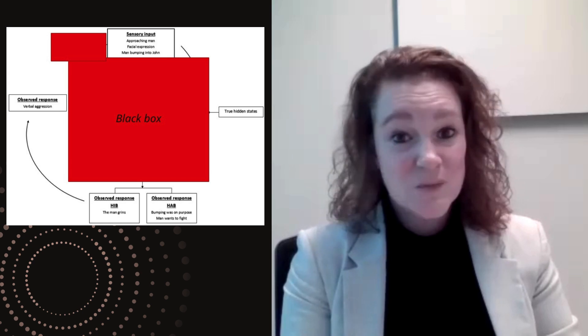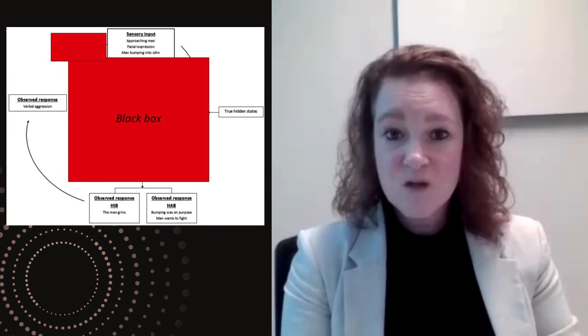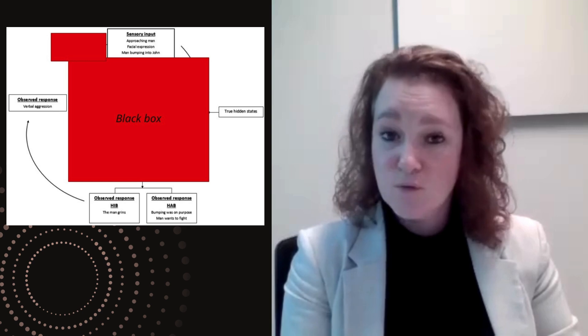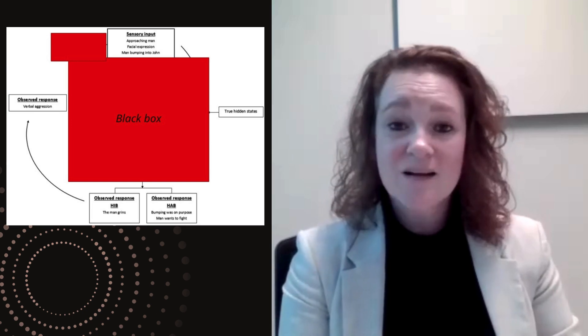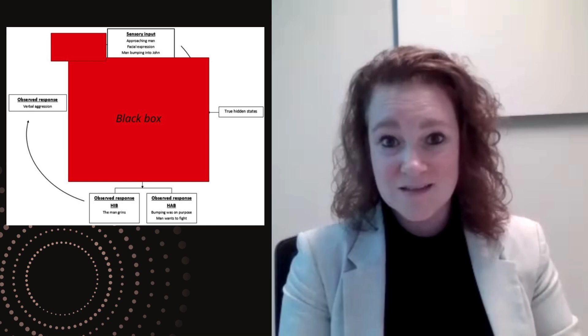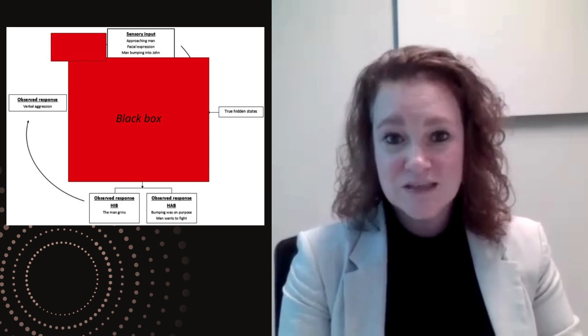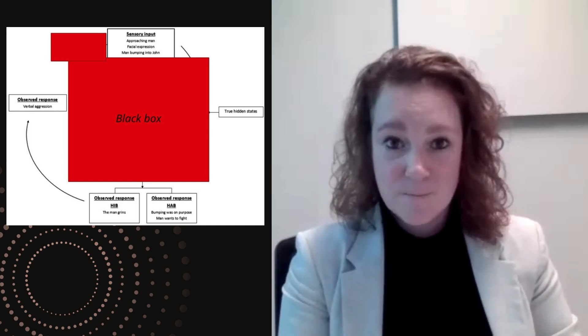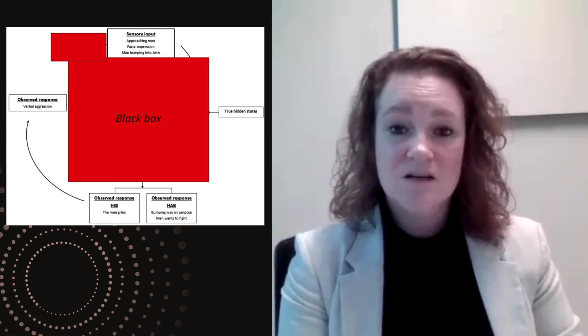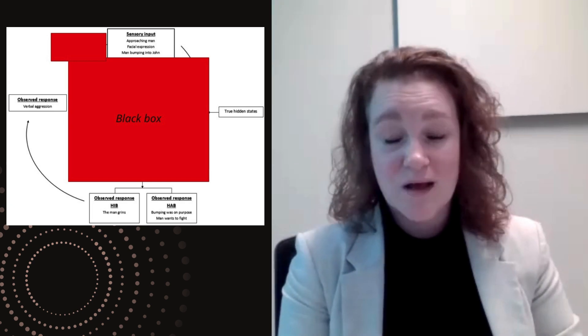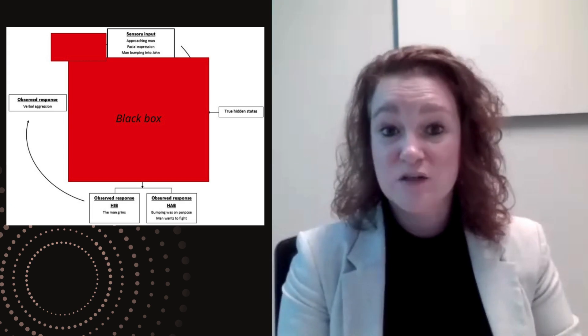With the current approach that we have for research, we are able to observe the social cue that has been interpreted incorrectly. We are able to observe or assess several forms of hostility biases, and we are able to observe or assess aggressive behavior. But the underlying processes responsible for these biases and their association with aggression is actually a huge black box. Within our model, we make a first attempt at explaining what we call these latent underlying processes — processes that we cannot observe but can deduce from behavior.